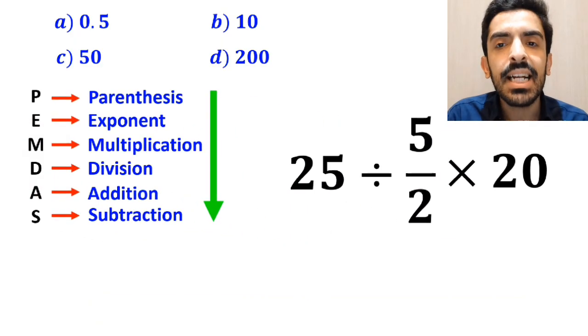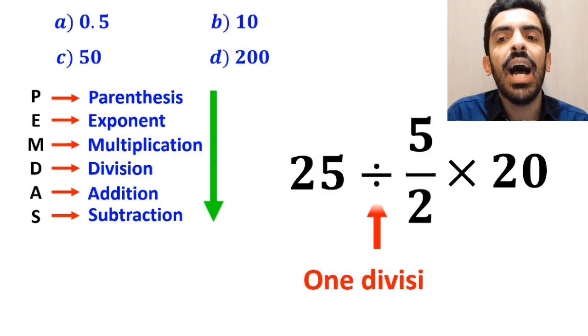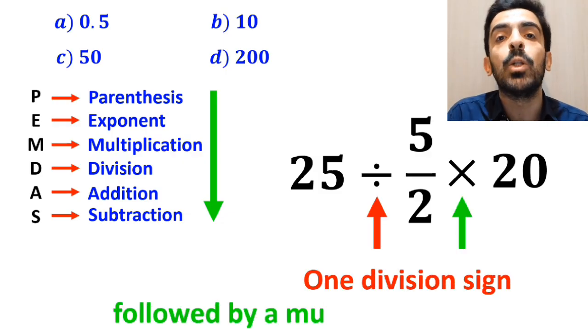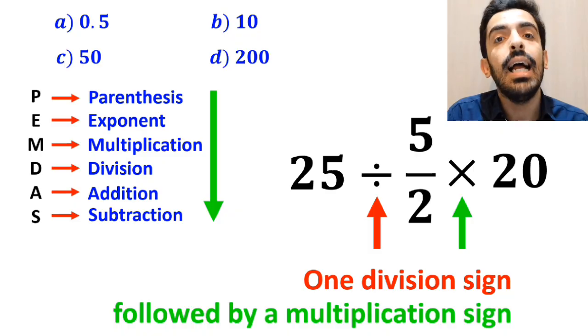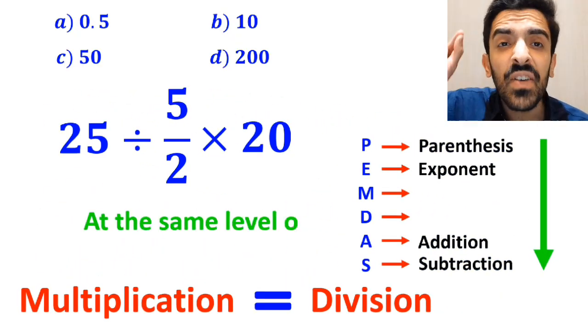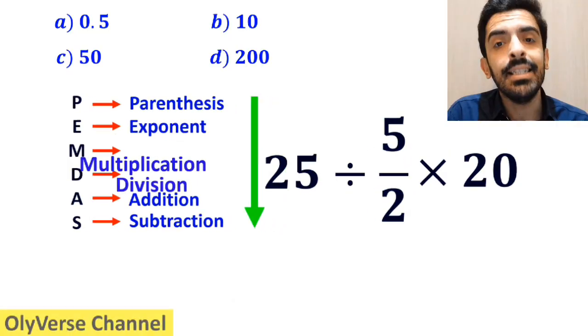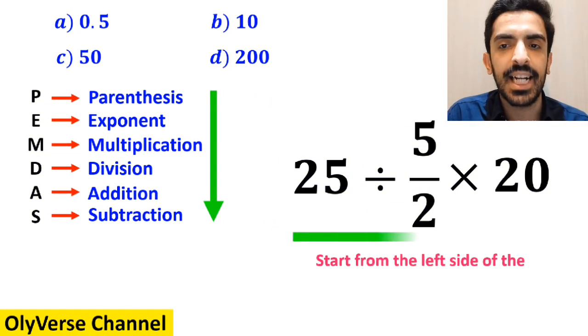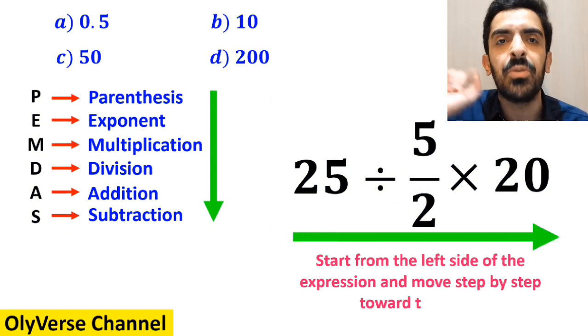As you can see on the screen, in this expression we have one division sign followed by a multiplication sign. It's very important to note that multiplication and division are at the same level of precedence. In this case, the best thing to do is to solve from the left side of the expression and move step by step toward the right.